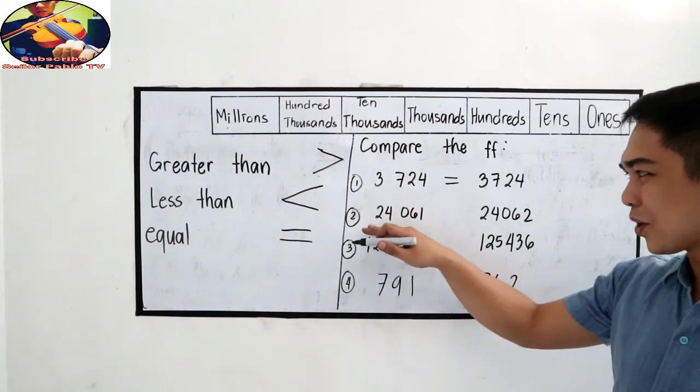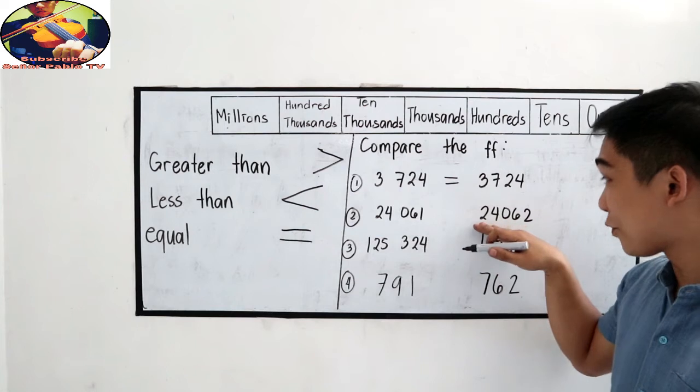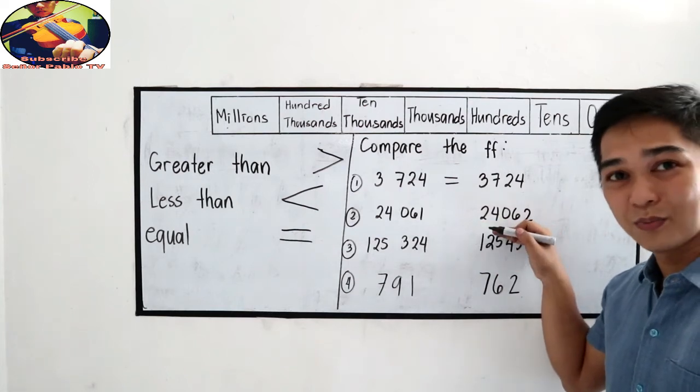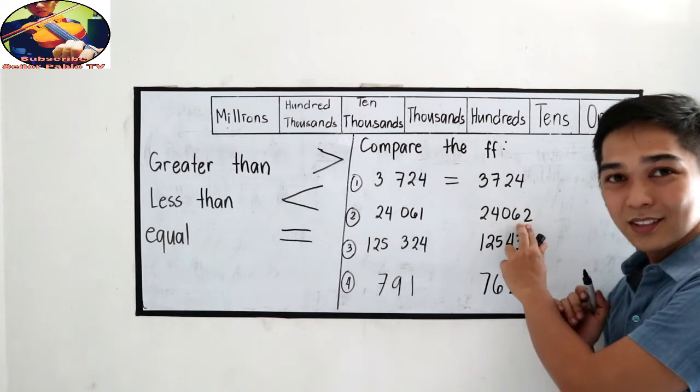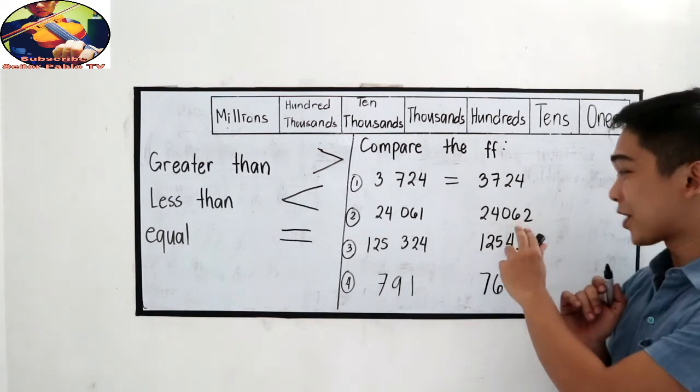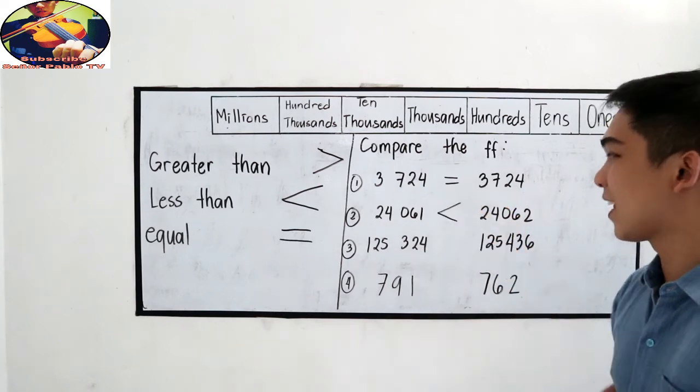Next, 24,061 and 24,062. So 61 and 62, which is greater? Of course, 62. So we will use the less than symbol.